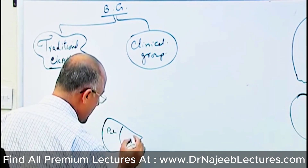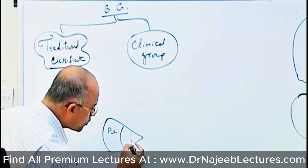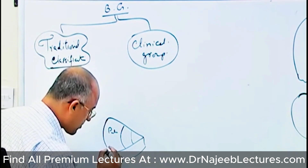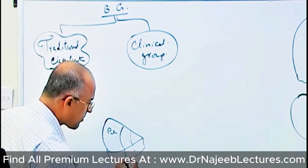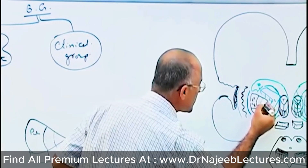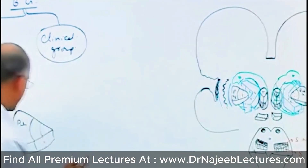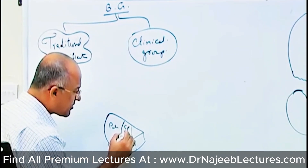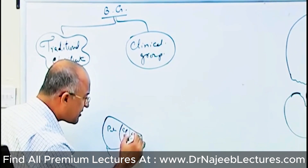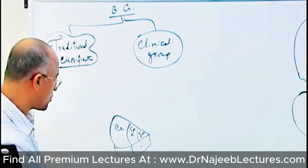You know this is putamen and this is globus pallidus. Globus pallidus is divided into two parts: this is the external part which is lateral, and this is the internal part which is medial. So globus pallidus has a medial-most part and a lateral part — globus pallidus lateral or globus pallidus external, and globus pallidus internal. The reason I am stressing this is because the connections and functions of these two parts are different, as we will see shortly.